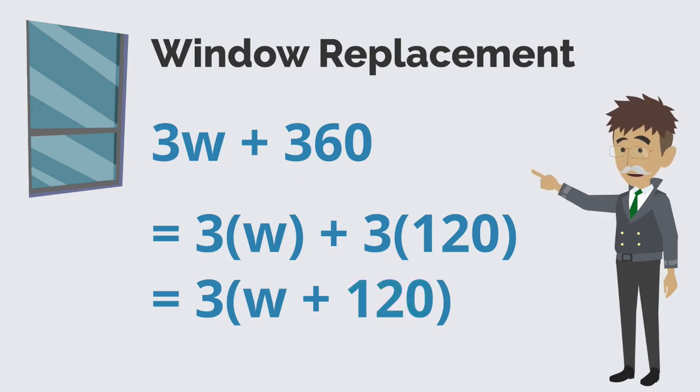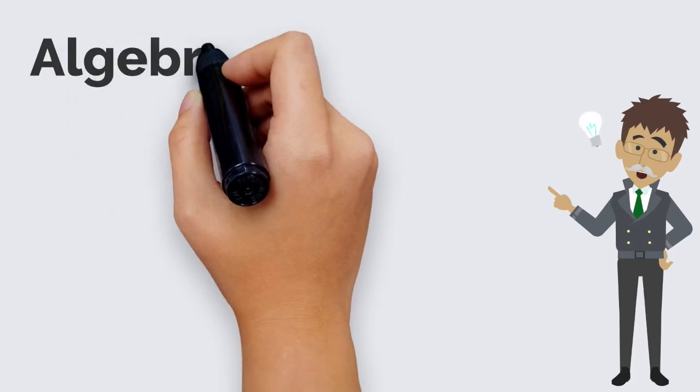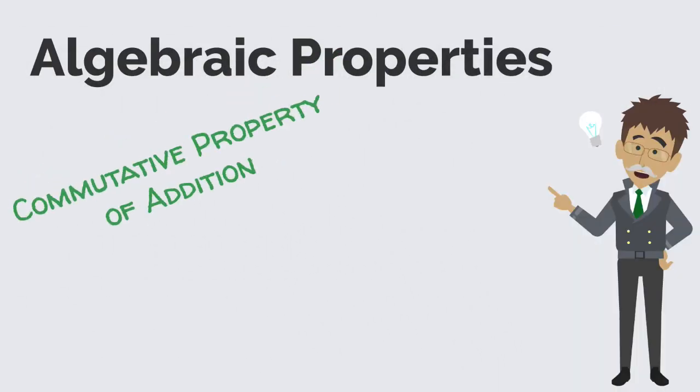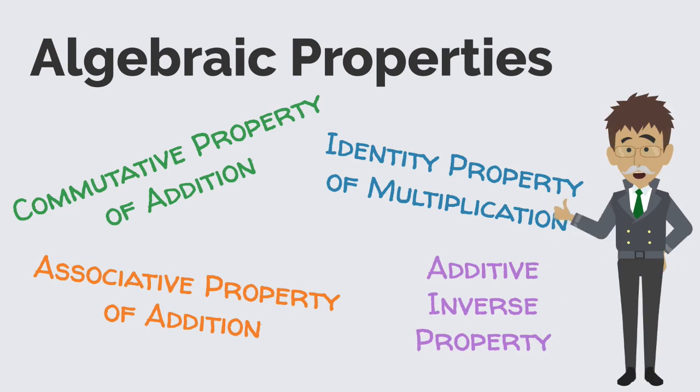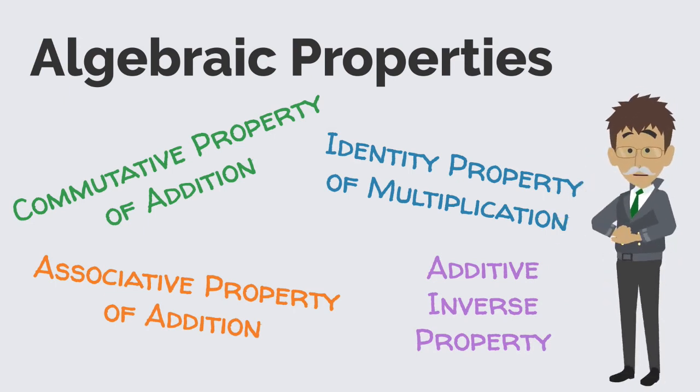The distributive property allows us to manipulate expressions to make them easier to work with or find information. There are many properties that make working with mathematical statements and equations easier. Learning them not only makes the math simpler, but they also make the math make sense.